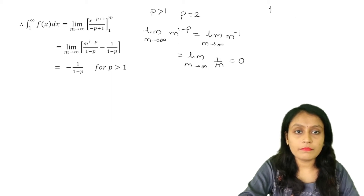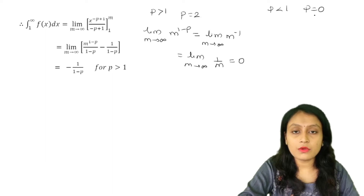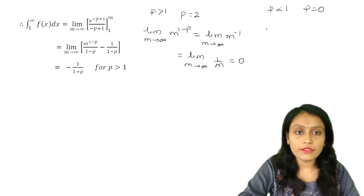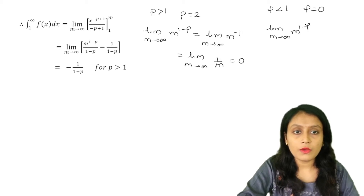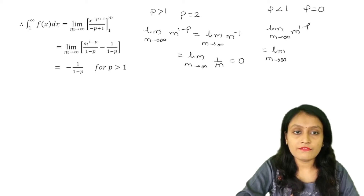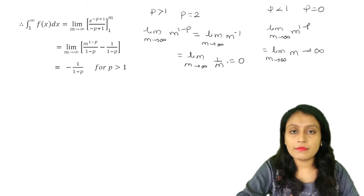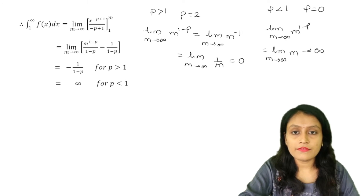Now for P less than 1, take for example P equal to 0. We find the limit m tends to infinity of m raised to (1 minus 0) = limit m tends to infinity of m. As m tends to infinity, this limit tends to infinity. So for P less than 1, this whole limit is infinite.